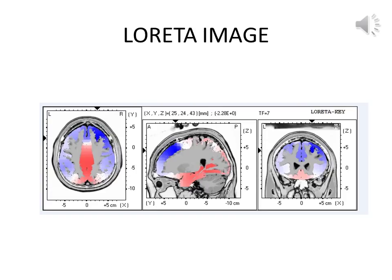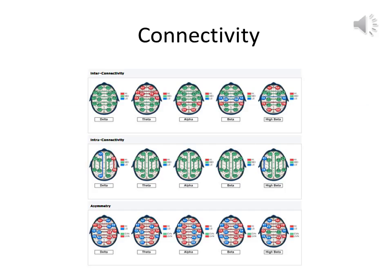This Loretta image of the same map shows the locations of the delta deficits, especially in the frontal region, where it is typically most commonly present and critical to cognitive functions. In the connectivity head-maps of this same case, note the frontal hypercoherence in red in the theta frequencies, typical of reports in TBI.